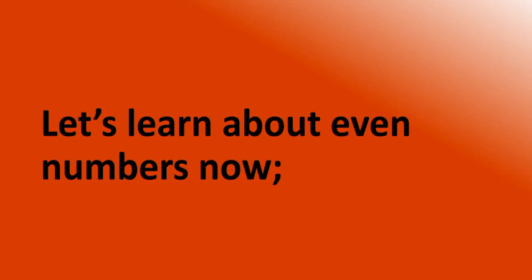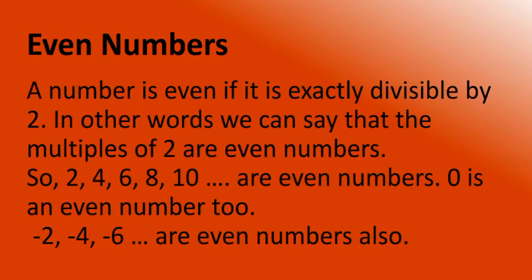Let's learn about even numbers now. A number is even if it is exactly divisible by 2. In other words, the multiples of 2 are even numbers. So 2, 4, 6, 8, 10, and so on are even numbers. Zero is also an even number, and minus 2, minus 4, minus 6, and so on are even numbers as well.